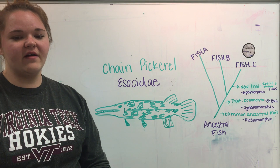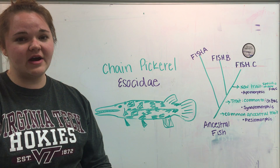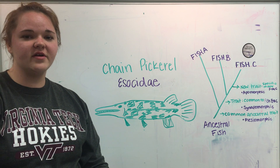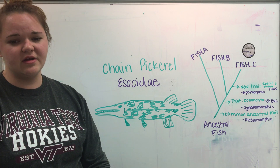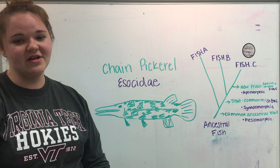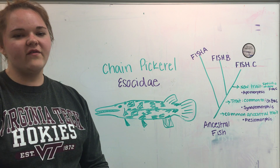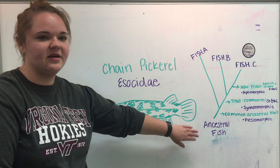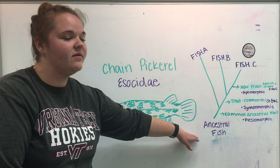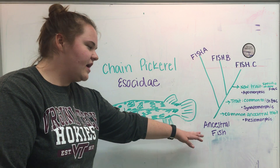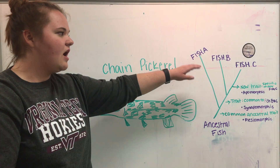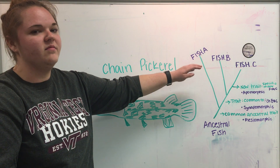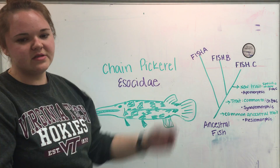There are four major criteria for making a cladogram. The first is that there must be a recent ancestor that is common for all of the fish. As we can see here, it's at the bottom of the cladogram, and as we move up to the top, the fish get more recent in time.